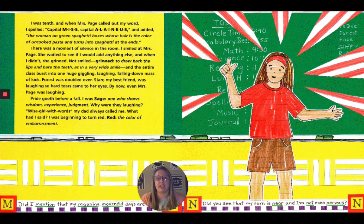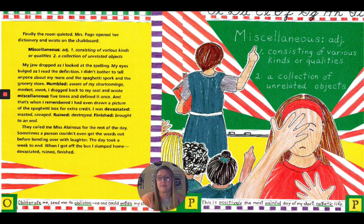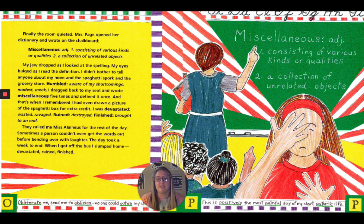Pride goeth before a fall. I was Sage — one who shows wisdom, experience, judgment. Why were they laughing? Wise girl with words, my dad always called me. What had I said? I was beginning to turn red. Red: the color of embarrassment. Finally, the room quieted. Mrs. Page opened her dictionary and wrote on the board: miscellaneous, M-I-S-C-E-L-L-A-N-E-O-U-S — consisting of various kinds or qualities, a collection of unrelated objects. My jaw dropped as I looked at the spelling. My eyes bulged as I read the definition. I didn't bother to tell anyone about my mom and the spaghetti spork and the grocery store. Humbled — aware of my shortcomings, modest, meek — I dragged myself back to my seat and wrote miscellaneous five times and defined it once.